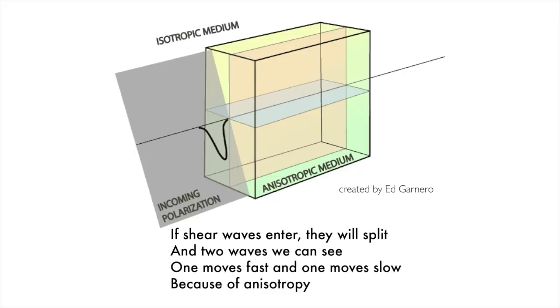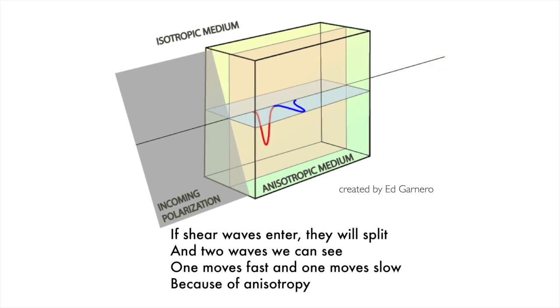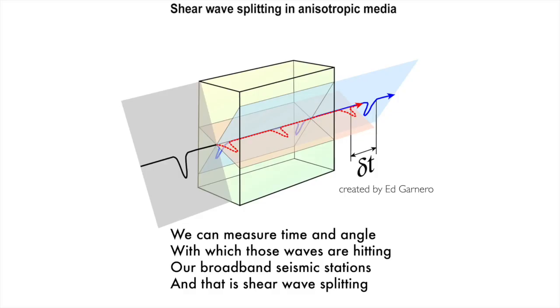If shear waves enter, they will split, and two waves we can see. One moves fast and one moves slow because of anisotropy. We can measure the time and angle with which those waves are hitting our broadband seismic stations — and that is shear wave splitting.